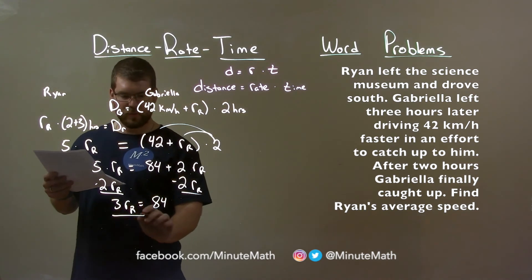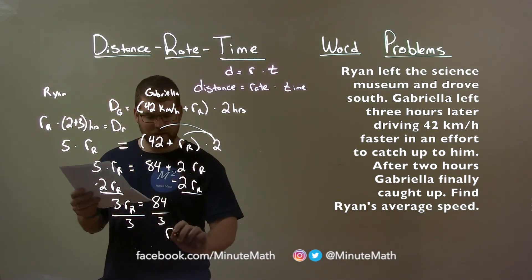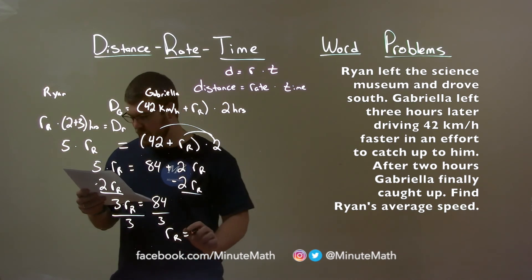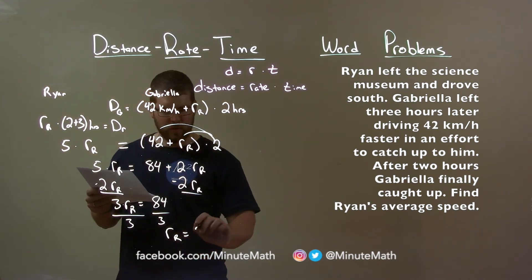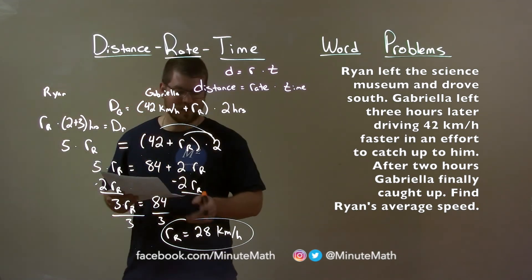Divide both sides by three, remember that's multiplication here, and we have Ryan's rate. 84 divided by three is 28, 28 kilometers per hour, and that is Ryan's average speed.